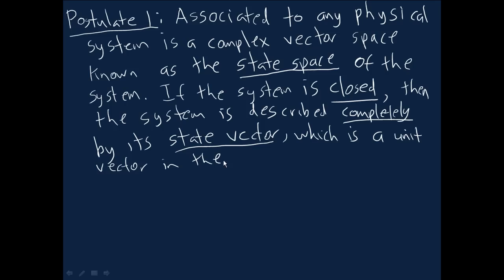There's not really very much new that's in this postulate. I've written it out at length so you can see all the elements, but most of the elements we've met before. In particular, qubits are an example of this postulate, where we have a two-dimensional state space. And many qubit systems are also an example of this postulate. So instead of having a two-dimensional complex vector space as their state space, they might, in the case of two qubits, have a four-dimensional complex vector space as their state space, and so on.